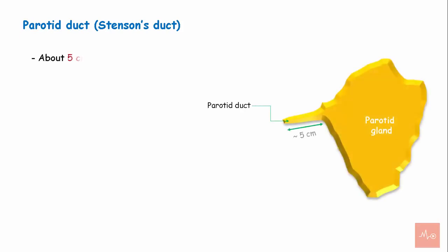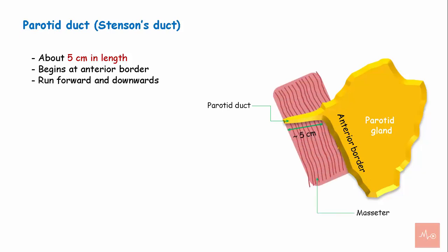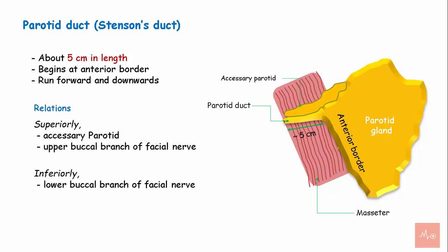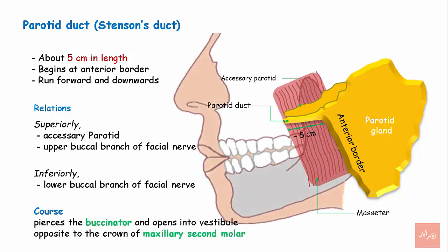The parotid duct, also called Stensen's duct, is about 5 cm in length. It begins at the anterior border of the parotid gland and runs forwards and downwards. Superiorly the duct is related to the accessory parotid and the upper buccal branch of the facial nerve, and inferiorly to the lower buccal branch of the facial nerve. The duct pierces the buccinator muscle and opens onto the vestibule opposite to the crown of the maxillary second molar.